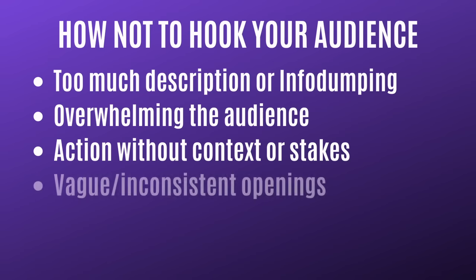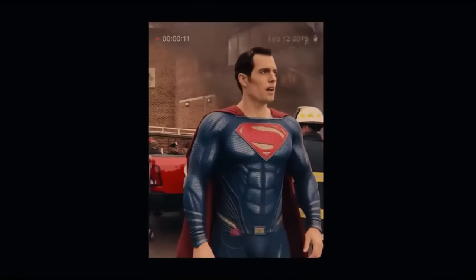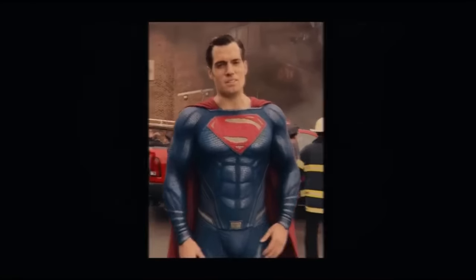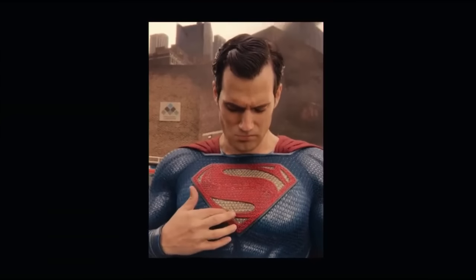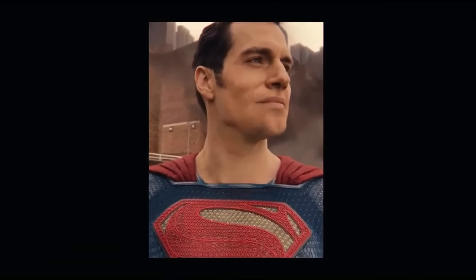The last thing to avoid is vague or inconsistent openings. Sometimes a writer will start a story with a scene that tries to be clever, but in the end it only leaves the audience feeling bored or confused. It's important to consider what types of questions you want to put in your audience's heads. When that opening scene ends, you want them wondering what will happen next — you don't want them wondering what did they just watch. An example comes from the movie Justice League, the theatrical cut, which opens with a kid interviewing Superman on a cell phone. This scene is just weird — the tone, the direction, the purpose — it's all over the place. It definitely doesn't hook the audience and in most cases it's only going to alienate them.